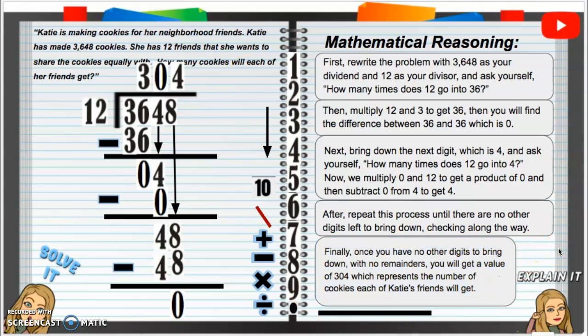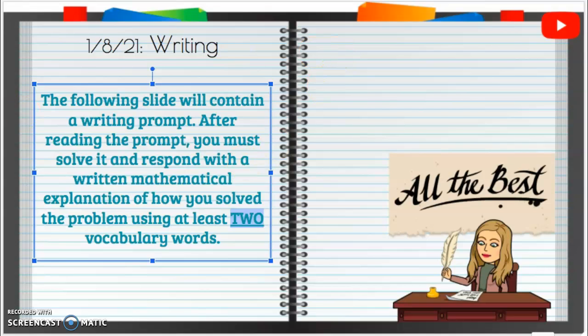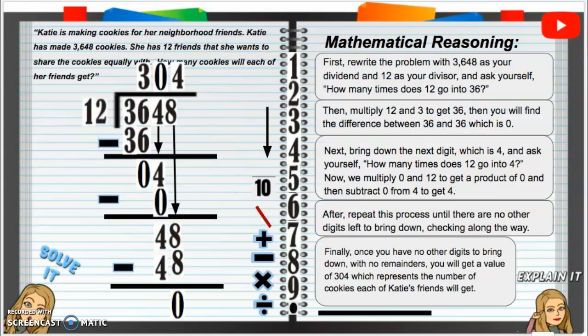So, as I read through, we're going to pick out some vocabulary words to make sure that we have at least 2 per the first slide. So, remember, we need at least 2 vocab words. First, rewrite the problem with 3,648 as your dividend and 12 as your divisor. Then, multiply 12 and 3 to get 36. Then, you will find the difference between 36 and 36, which is 0. I know that word difference is a vocabulary word, so I'm going to highlight that.